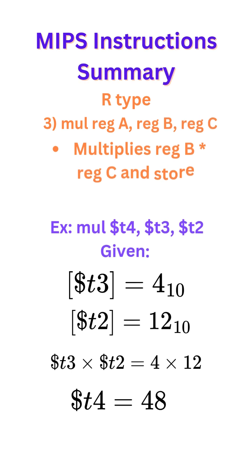Next our R-type is mul register A, register B, register C. This instruction basically multiplies register B times register C and stores the result in register A.